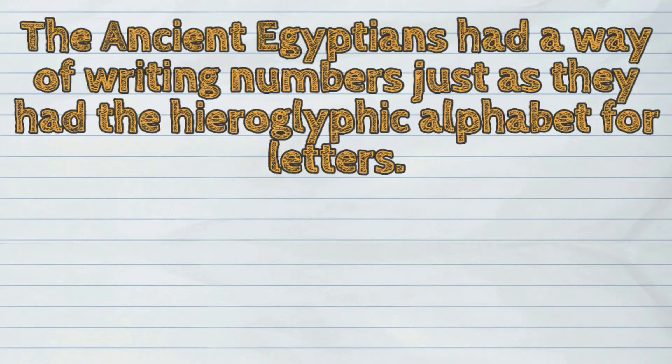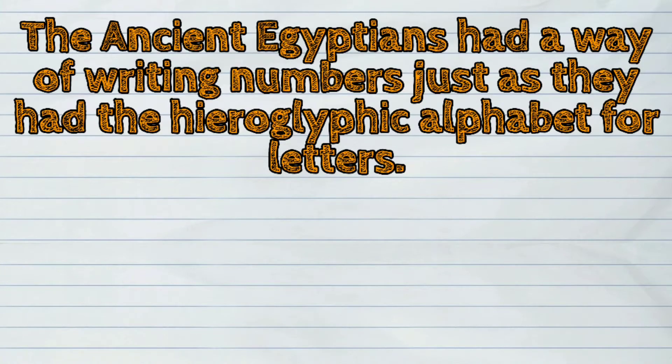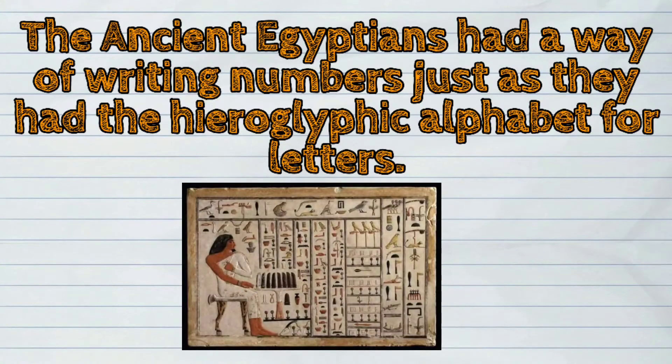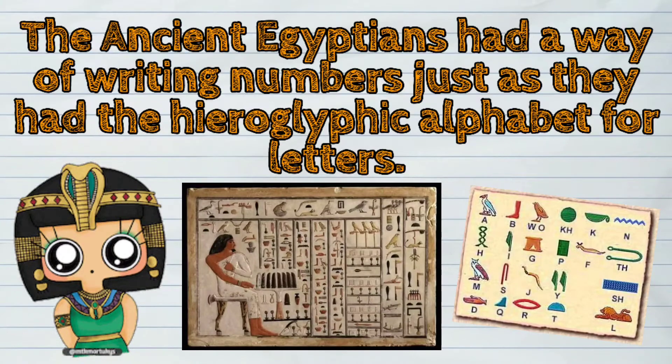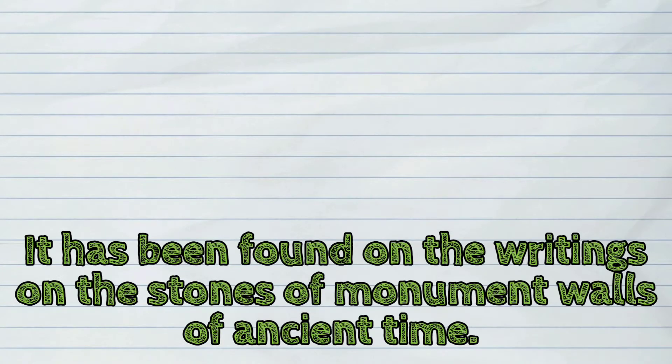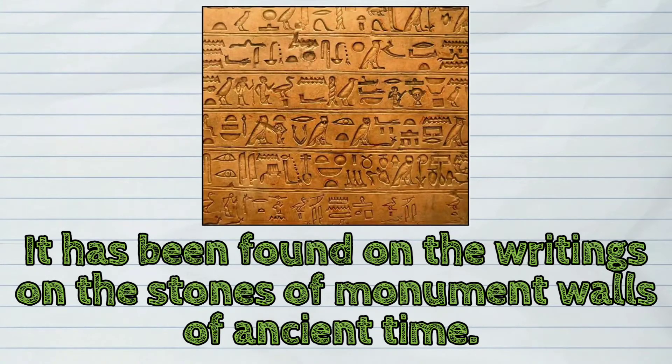The ancient Egyptians had a way of writing numbers just as they had the hieroglyphic alphabet for letters. It has been found on the writings on the stones of monument walls of ancient time.